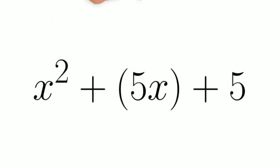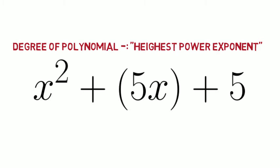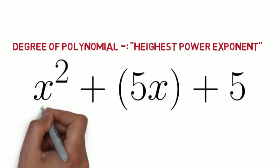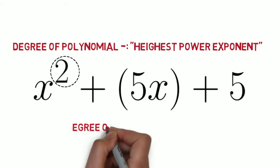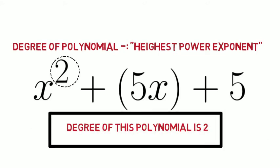Now, see on your screen, we have x square plus 5 times x plus 5. To look for degree of polynomial, we have to find the highest power exponent. So look, this term x square has the highest power, which is 2. Hence, the degree of this polynomial is 2.